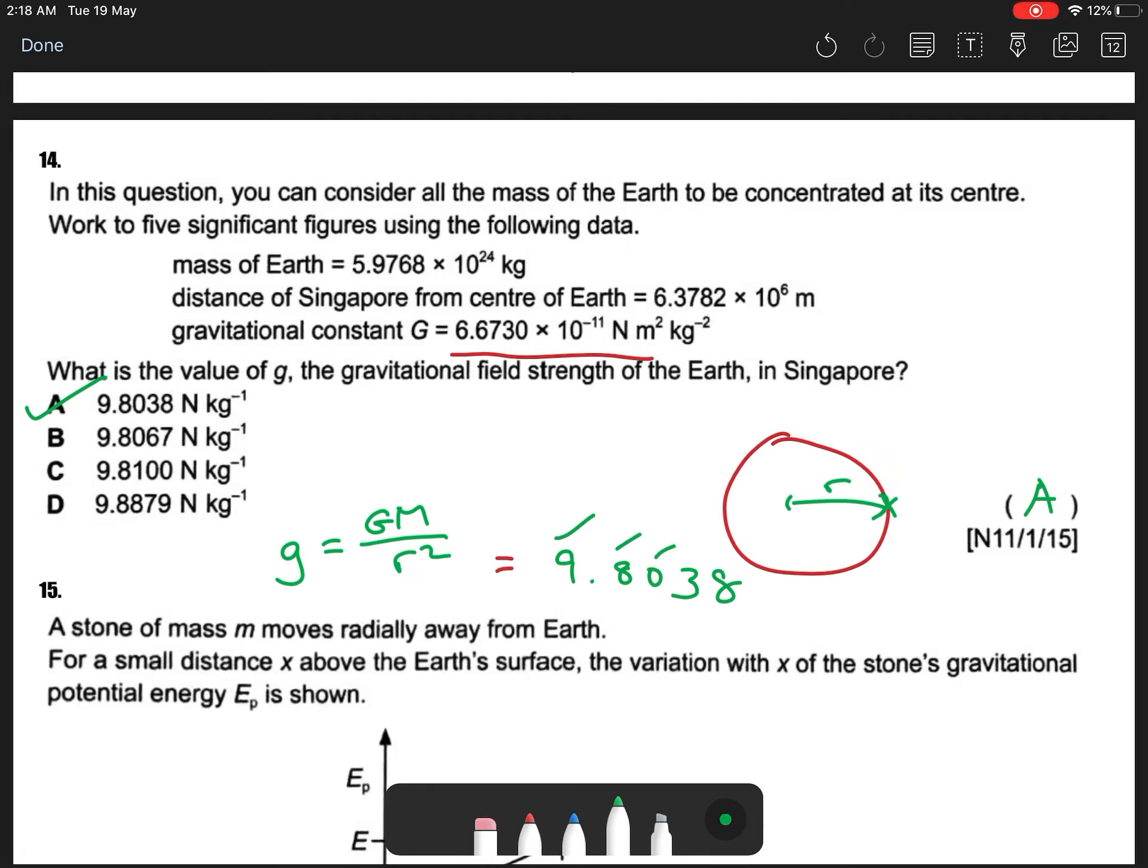So 1, 2, 3, 4, 5, 5 significant figures, okay. So this is my equator's g field.